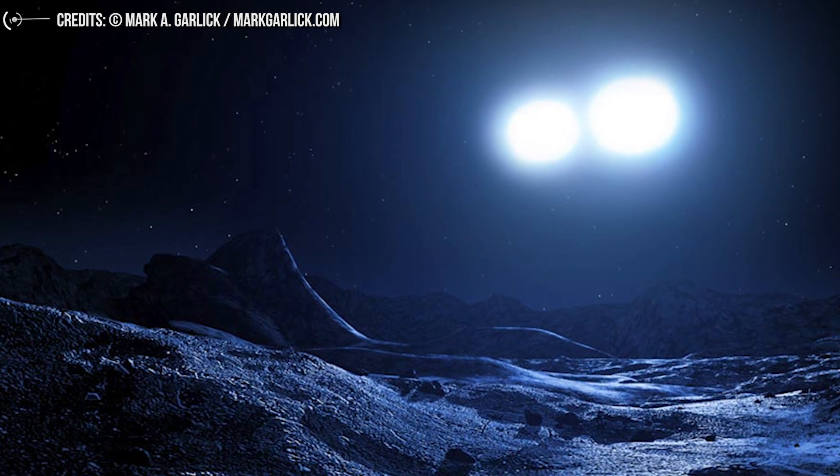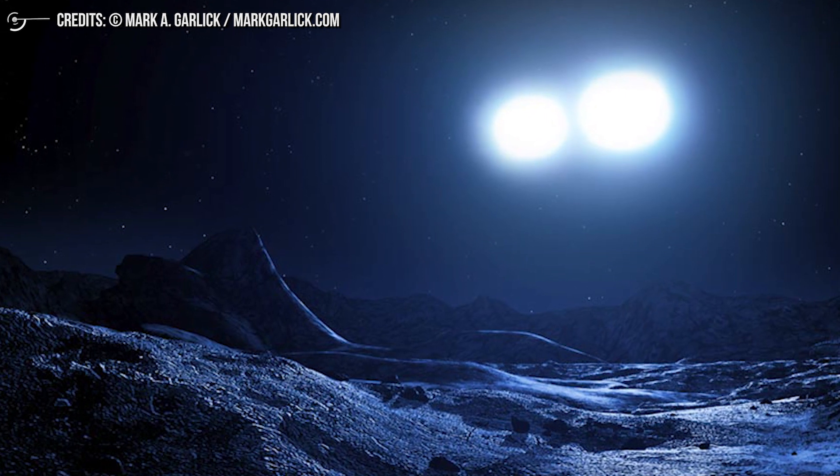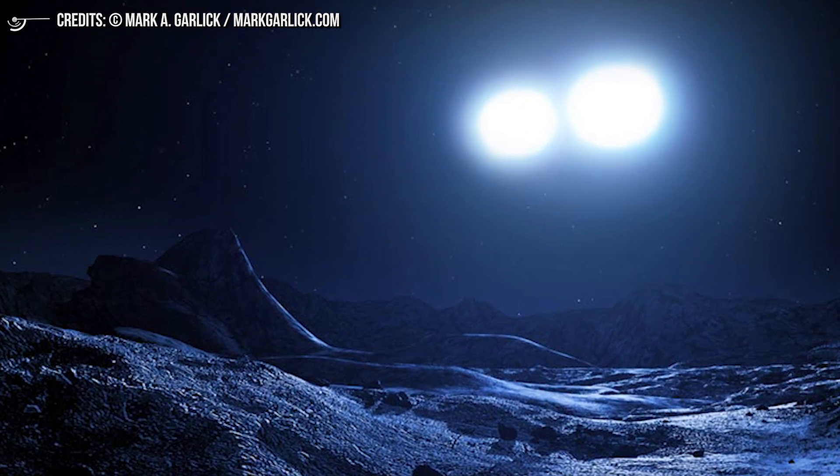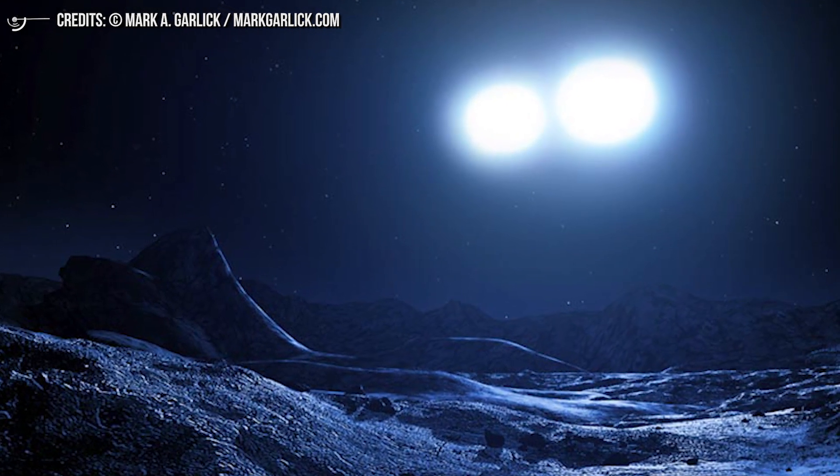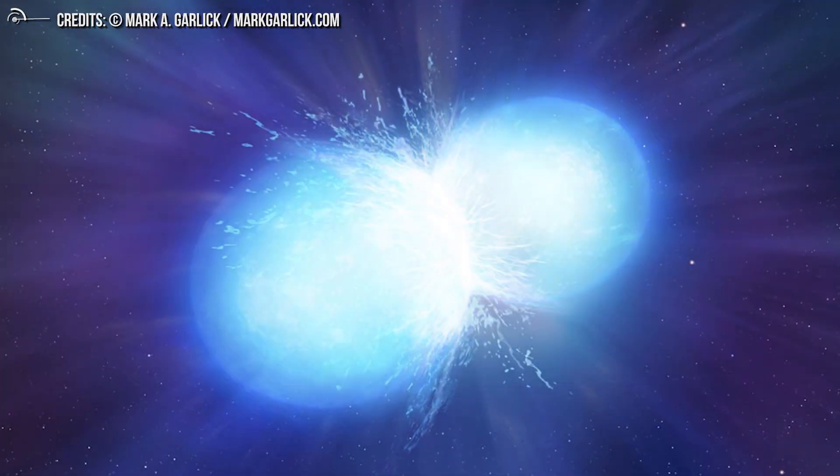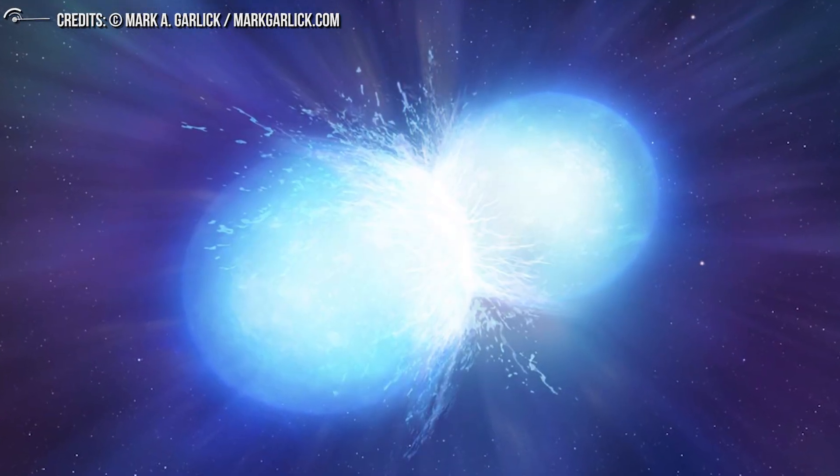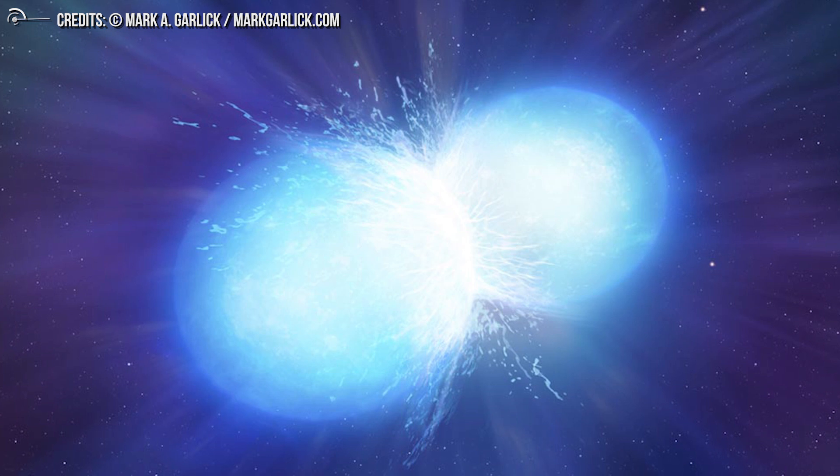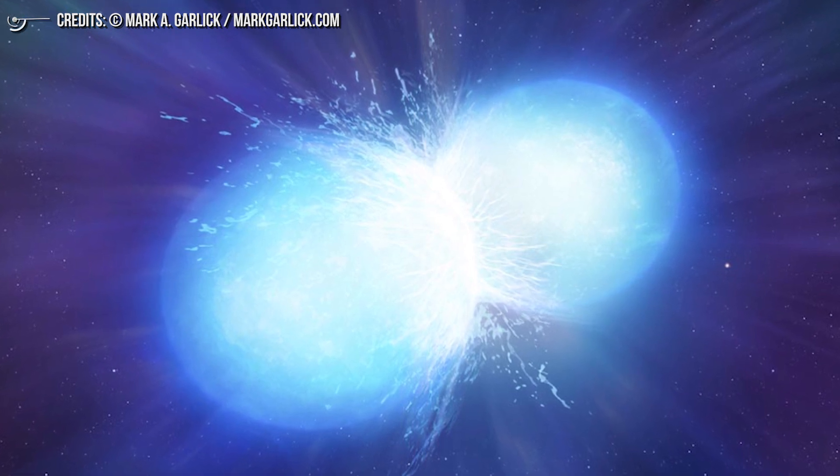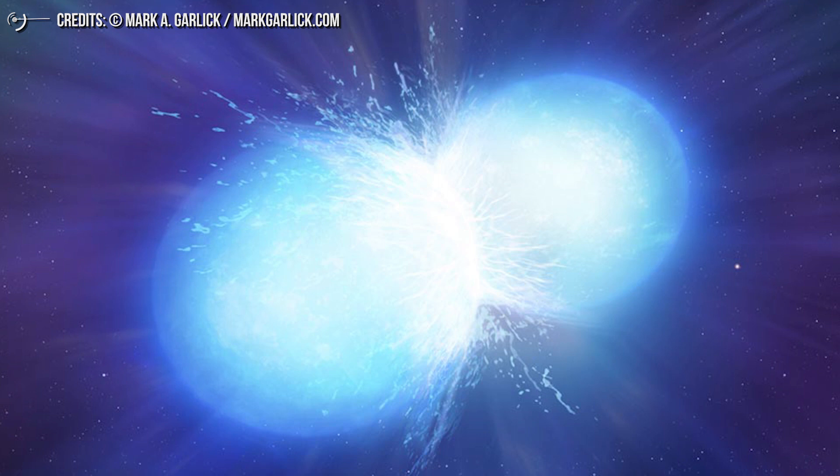MY Camelopardalis consists of two of the most massive objects known. In fact, its components, two stars of spectral type O, that is blue, very hot and bright, with masses respectively equal to 38 and 32 times the mass of the Sun, are still in the main sequence and are very close.